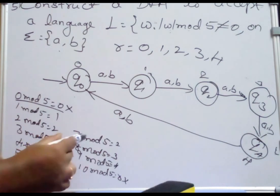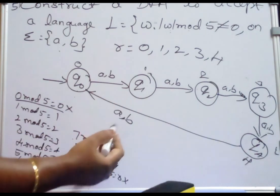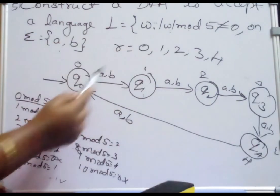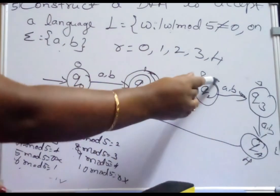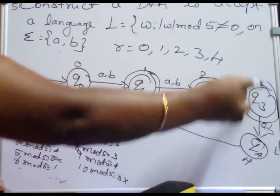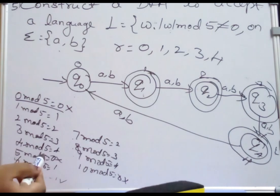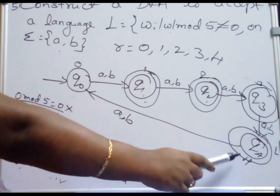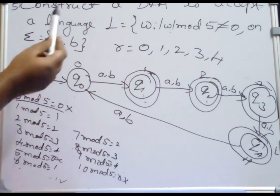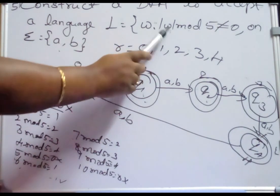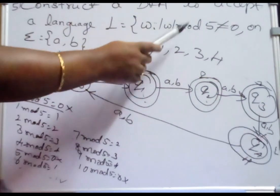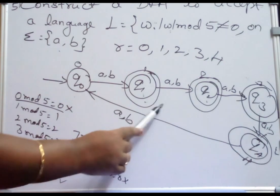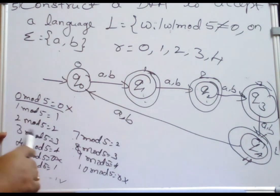Except for strings whose length is a multiple of 5 — 0, 5, 10, 15, etc. — all strings are accepted. Q1 represents remainder 1, Q2 represents remainder 2, and apart from remainder 0, all other strings must be accepted. So the DFA has 4 different final states: Q1 with remainder 1, Q2 with remainder 2, Q3 with remainder 3, and Q4 with remainder 4. This automata accepts language W where W mod 5 is not equal to 0.